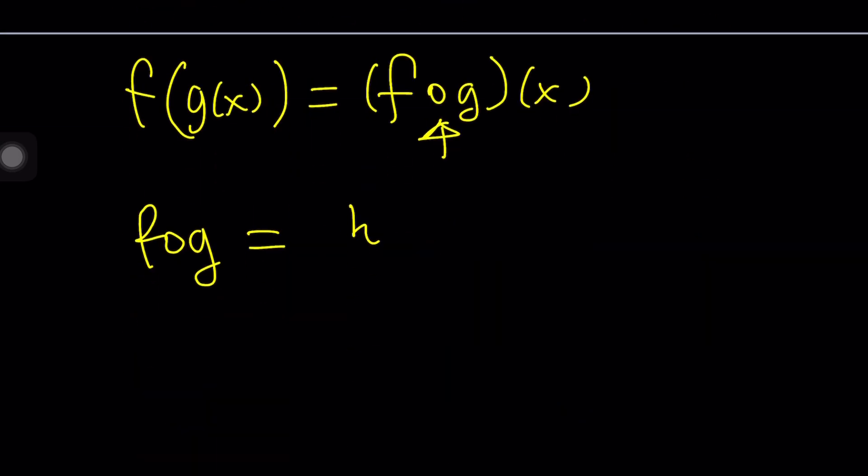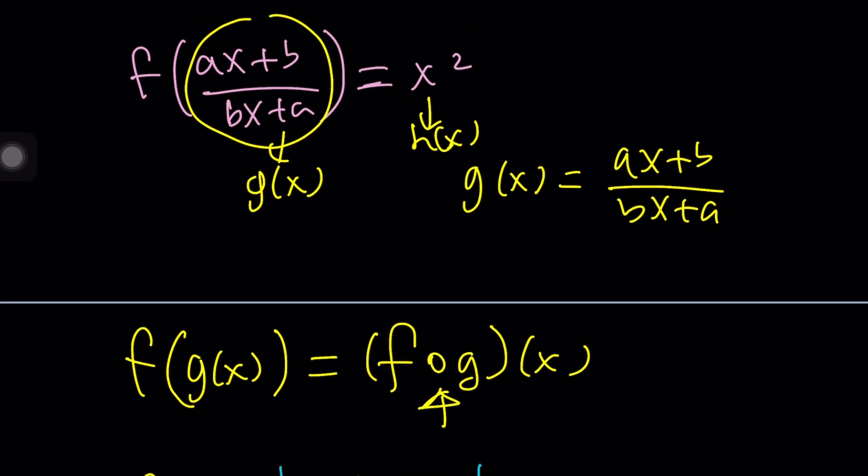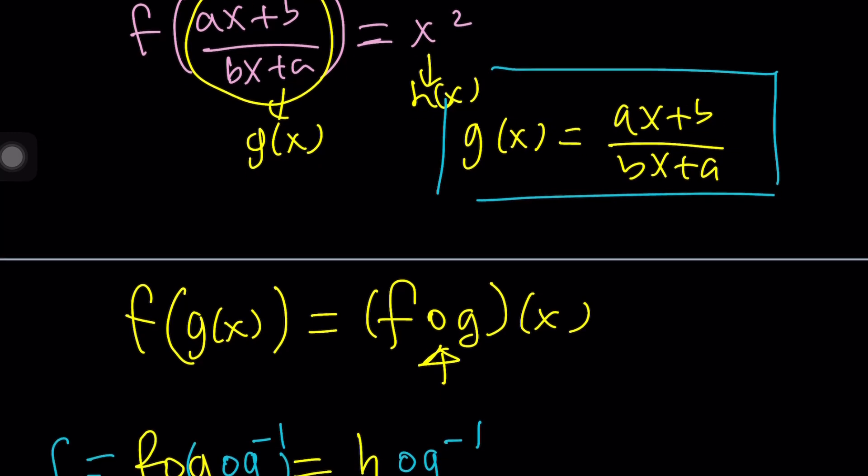To isolate f, we can just compose with g inverse on both sides because g composition g inverse is the identity function, and f composition identity is f itself. So this would turn into f. In other words, we have to do h composition g inverse. And this is g, and this is g inverse.